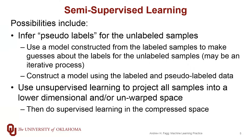There are both classification and regression types of semi-supervised approaches we can take. For classification, what we essentially do is make inferences about what the labels might be for the unlabeled samples. One way to do this is to first construct a model using just the labeled samples, then use that model to provide pseudo-labels to the remaining unlabeled samples. From there, we construct a more comprehensive model that makes use of both the true labels and the pseudo-labels.